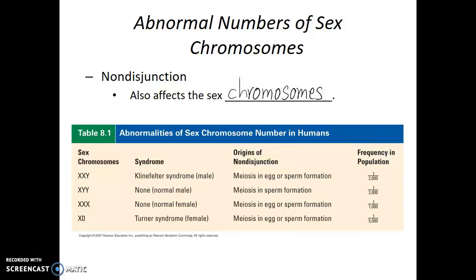Whereas if an individual does have a Y chromosome, their biological sex will be male. For example, if an individual has two X chromosomes and a Y chromosome, that individual will be biologically male and will have a condition known as Klinefelter syndrome. Individuals with Klinefelter syndrome have normal intelligence and normal lifespan, and may have some reduced fertility. Having this abnormal number of sex chromosomes does not automatically impact their gender or sexual orientation. They will be biologically male, though may have some more feminine characteristics, and the changes are often so slight and subtle that you wouldn't necessarily be able to tell.